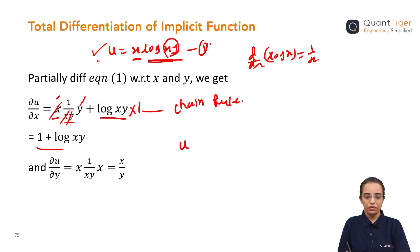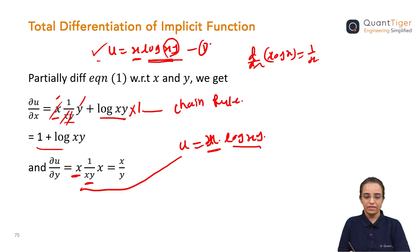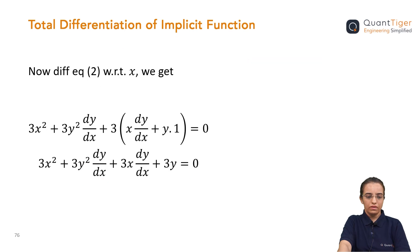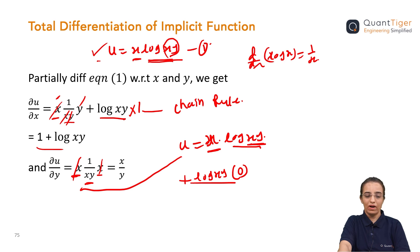Similarly, differentiating u = x·log(xy) with respect to y to find ∂u/∂y: first function x as it is, times the derivative of log(xy) which is 1/(xy), multiplied by the derivative of xy with respect to y which is x. The second term — log(xy) times the derivative of x — is zero since x is treated as constant. After cancellation, we get ∂u/∂y = 1/y.